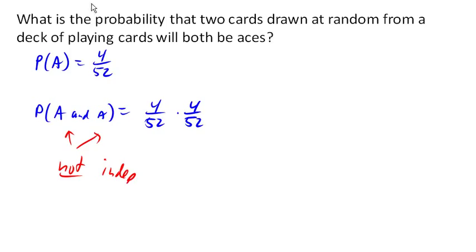Because after we pull out our first card, after we pull out the first ace, it changes not only the number of cards in the deck, but also the number of aces in the deck, right?